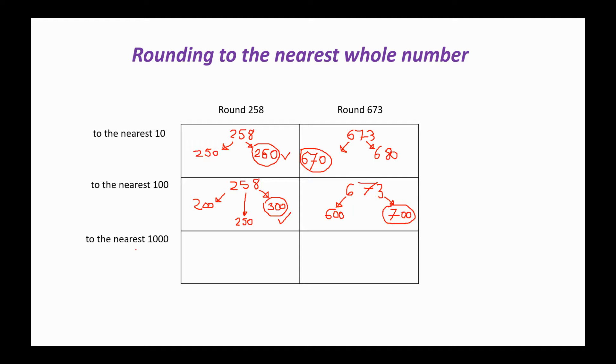Final row for this table then. So the nearest 1,000. This one's a bit trickier. If we've got 258, well, the 1,000 that comes before 258 is 0, and the 1,000 that comes afterwards is 1,000. So 258 is closer to 0 than it is to 1,000. So that's our answer just there.